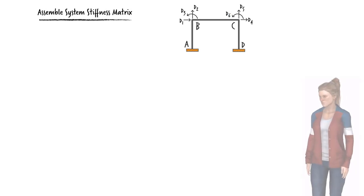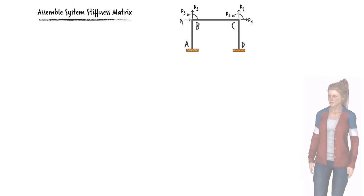Our frame has six degrees of freedom, the displacements and rotations at joints B and C. We are going to use the member stiffness matrices to come up with the system stiffness matrix.